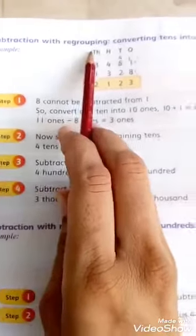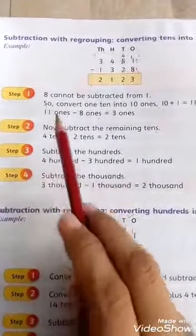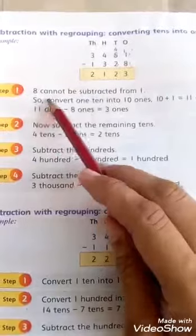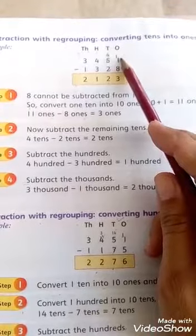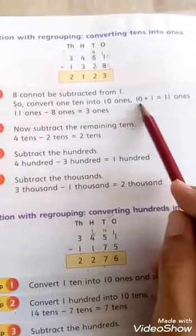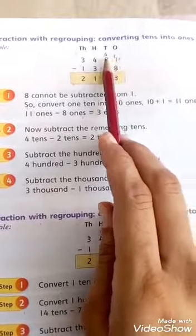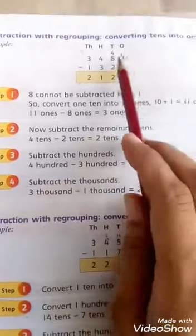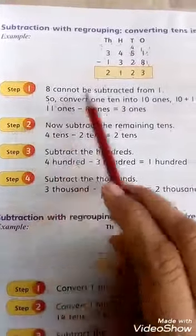Now come towards page number 47. On page number 47 here is the subtraction with regrouping — converting tens into ones. Here is an example of a four-digit number. You have to follow the four steps. In the first step you have to subtract the ones column. 8 cannot be subtracted from 1 because 1 is a smaller number and 8 is a bigger number, so convert 1 ten into 10 ones. 10 plus 1 equals 11 ones.